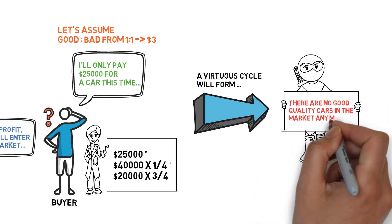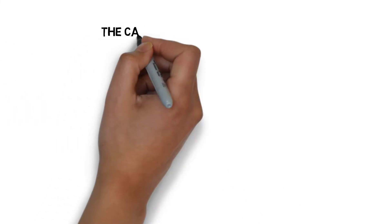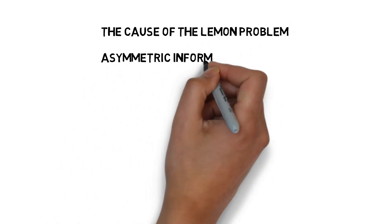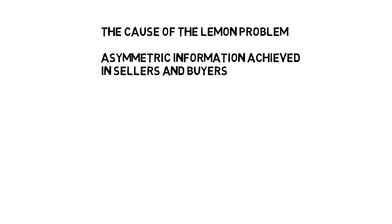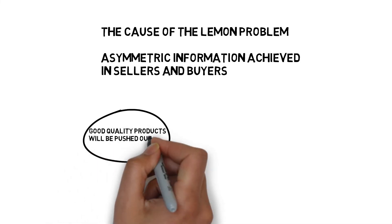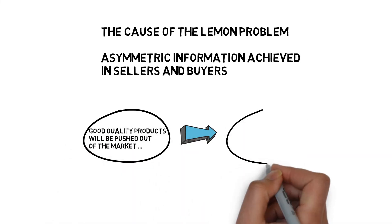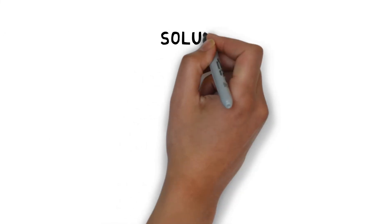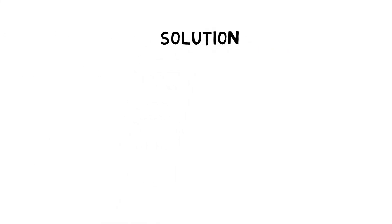The cause of the lemon problem is the asymmetric information between sellers and buyers. The sellers know the status of the product while the buyers do not. In extreme circumstances, the good quality products will be pushed out of the market and the market will shrink over time.